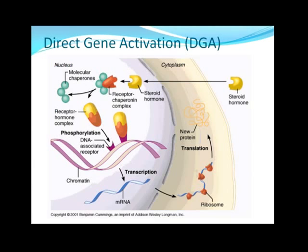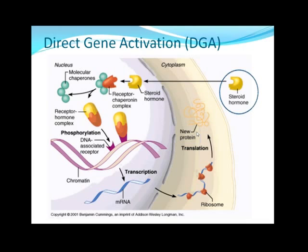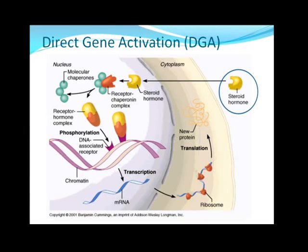Here's the direct gene activation — it's done by steroid hormones. Why can they directly activate genes or transcription? Because steroid hormones are lipid soluble; they can pass right through the plasma membrane and go right into the nucleus of a cell. The protein receptors for steroid hormones are located in the nucleus of their target cells. They form a complex that directly binds onto DNA and transcribes whatever gene is needed, going through transcription and translation to produce a new protein.